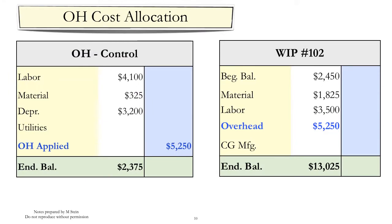This shows the transfer of overhead costs to a particular work in process account. Notice that the transfer in cost is accomplished by a credit to the overhead control and a debit to the work in process account.